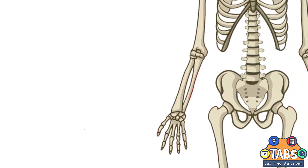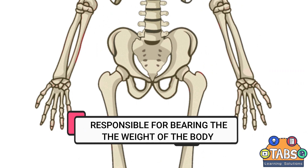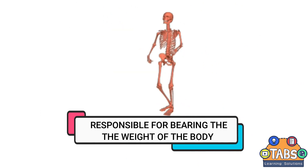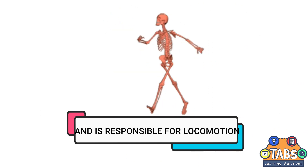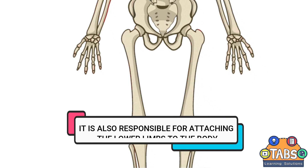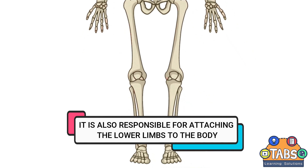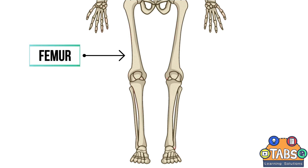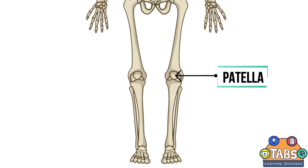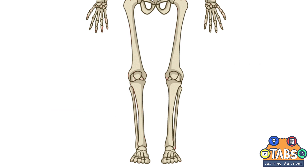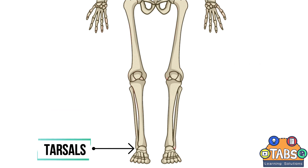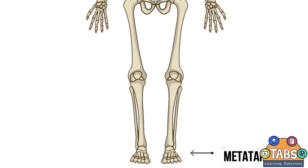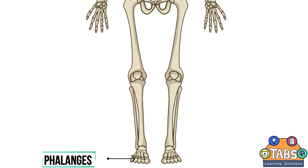The pelvic girdle is responsible for bearing the weight of the body and for locomotion. It is also responsible for attaching the lower limbs to the body. The lower limb consists of the thigh or femur, kneecap or patella, leg or tibia and fibula, tarsals, metatarsals, and phalanges.